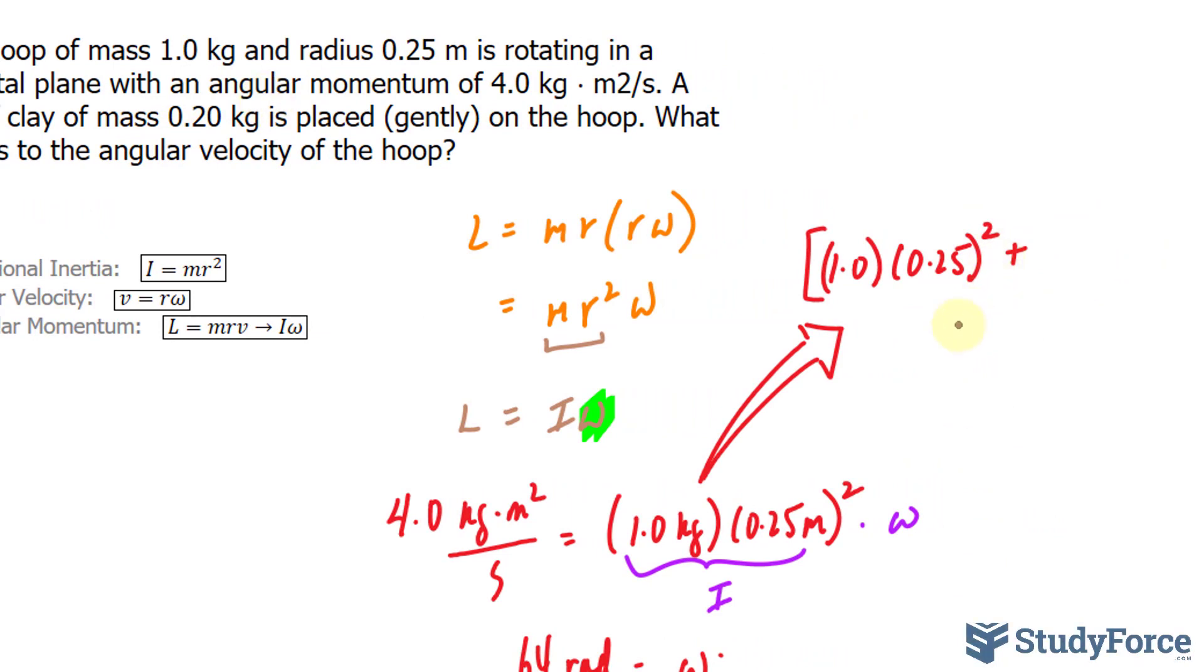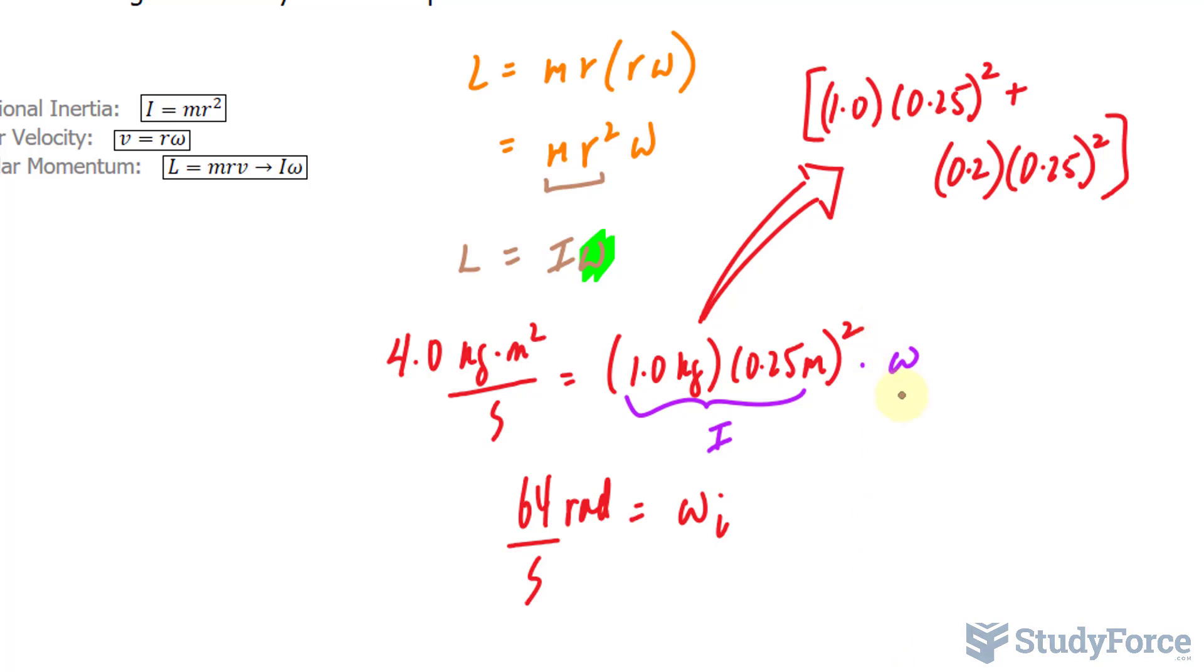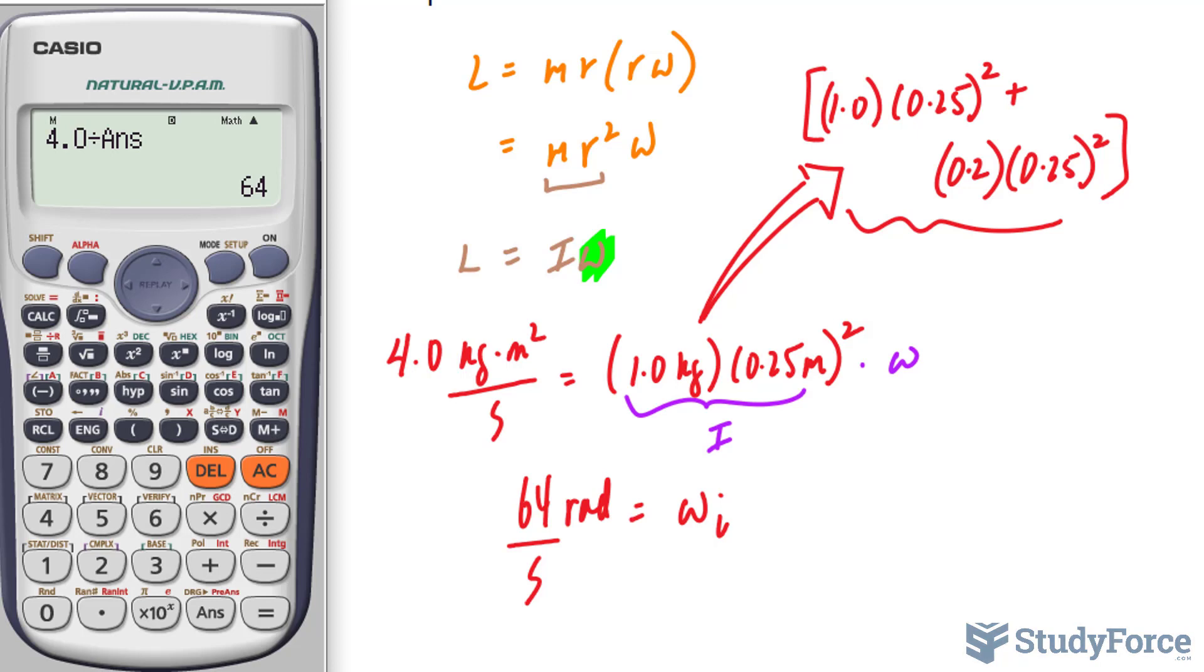Plus, and now we have a mass of 0.20, and the radius is the same, to the power of 2. So let's go ahead and find out our new angular velocity given this change, and then we can compare what happens.